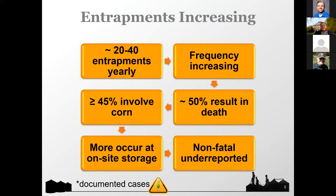When it comes to grain entrapments, every year we're seeing 20 to 40 entrapments. On a more recent trend, the frequency has increased — in 2019, we had 38 incidents, which was a significant increase over previous years. These cases come mostly from news clippings, so there's definitely under-reporting. Just imagine the cases that would be considered newsworthy versus those that would not, and you can understand how our best efforts will always underestimate the number of entrapments every year.